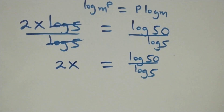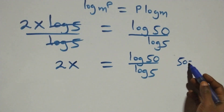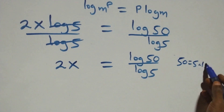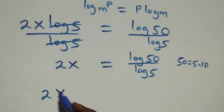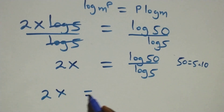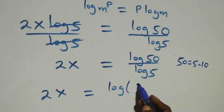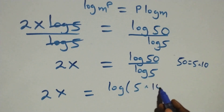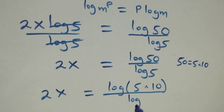From here we can write 50 as 5 times 10. So what we have becomes 2x equals log of 5 times 10, all over log 5.